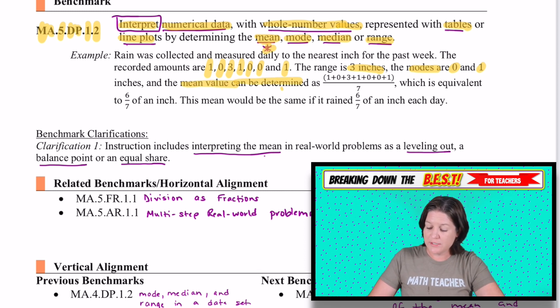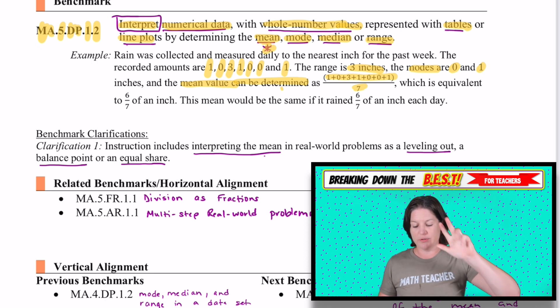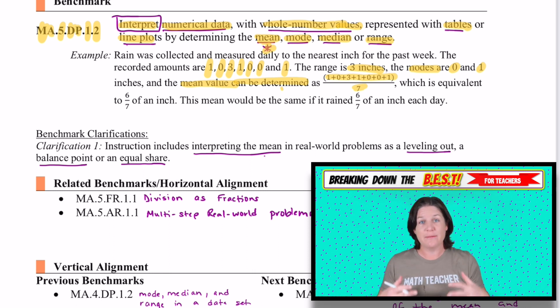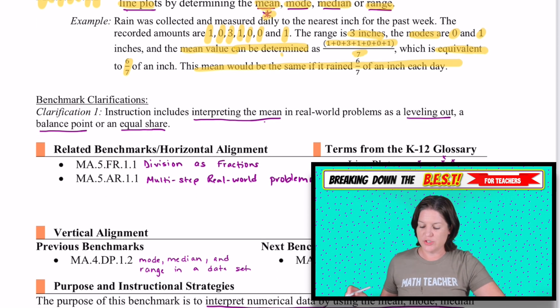The mean value can be determined by adding up all the amounts. So 1 plus 0 plus 3 plus 1 plus 0 plus 0 plus 1. Then you divide all that by 7. How did we get 7? Well, that's how many numbers were given to us. 1, 0, 3, 1, 0, 0, 1. Seven different values. So you add up all the totals and divide it by the number of data points that you have, which would be equivalent or equal to 6 7ths of an inch when you add it up. So the mean would be the same if it rained 6 7ths of an inch each day.